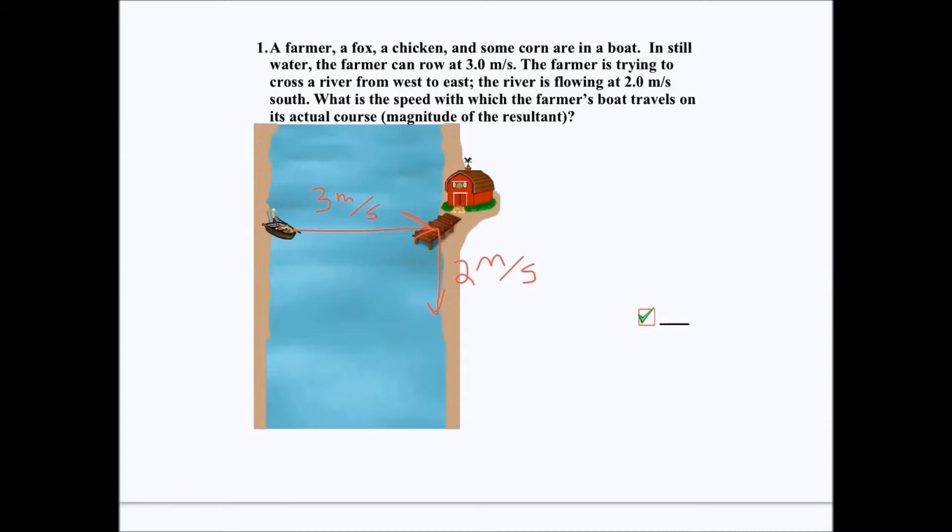So, I set up my picture here, and now I have to draw the resultant. Using the tip-to-tail method, we add him up, and we draw the resultant. And that should be the actual velocity of the boat after the river's been pushing on him and he's been rowing due east.